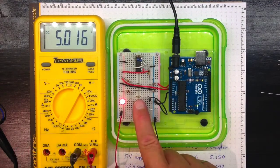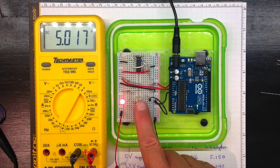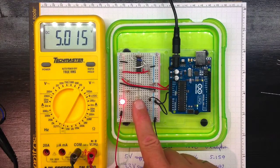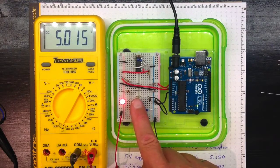This resistor has a green, blue, and brown band on it. Green means five, blue means six, brown means one, zero. That's a 560 ohm resistor.